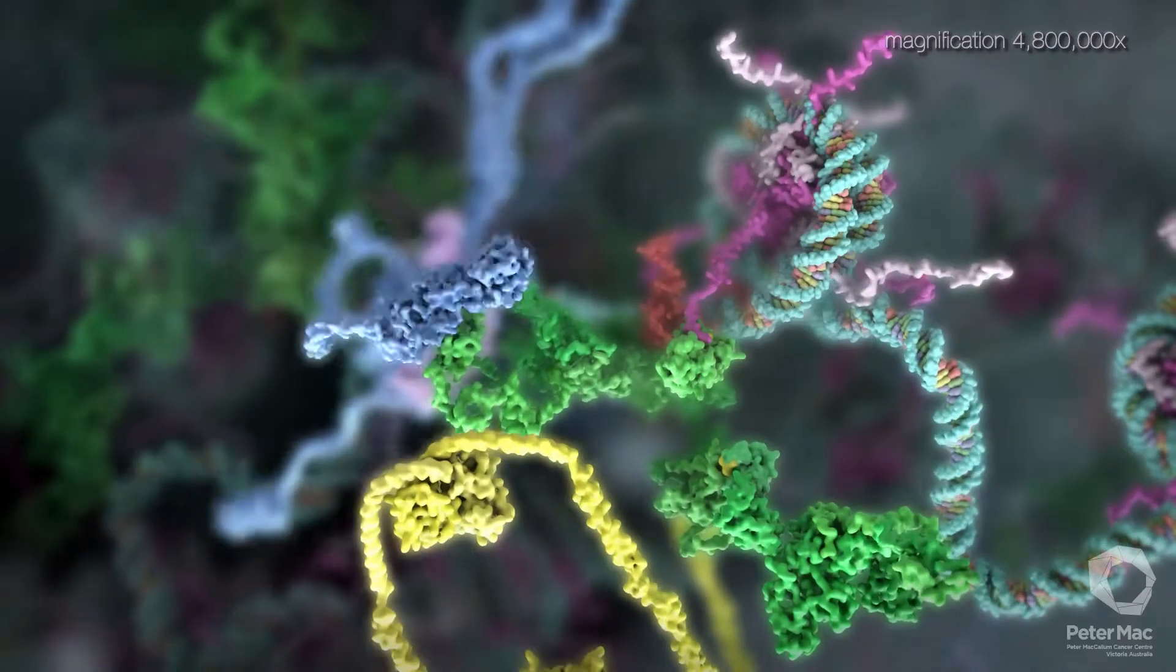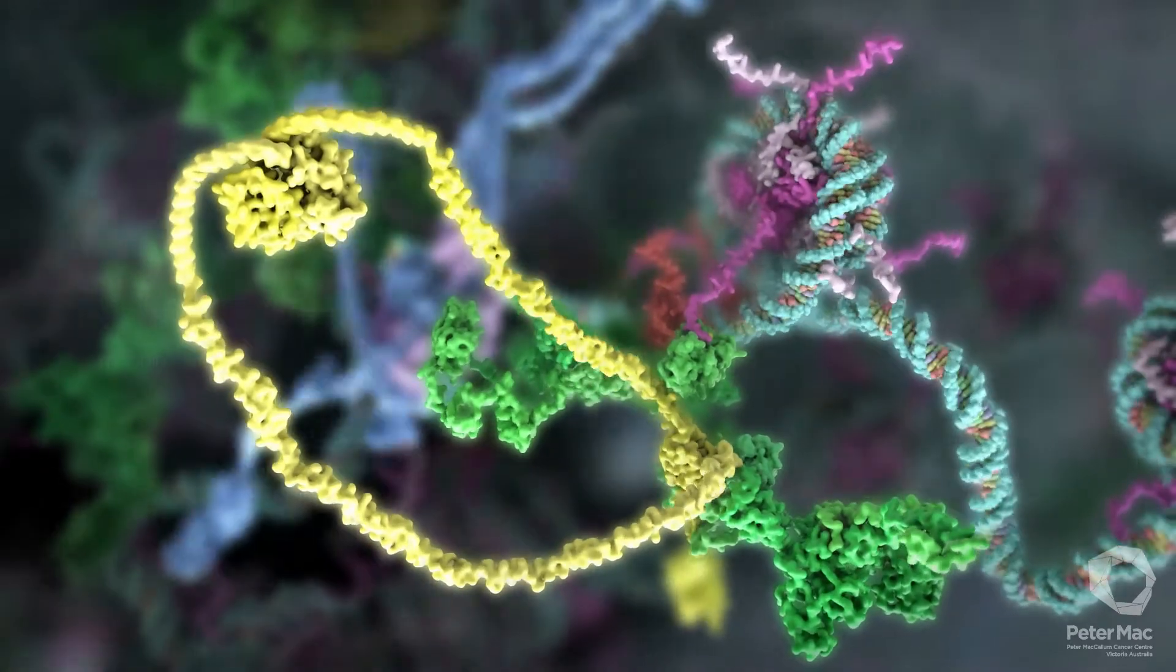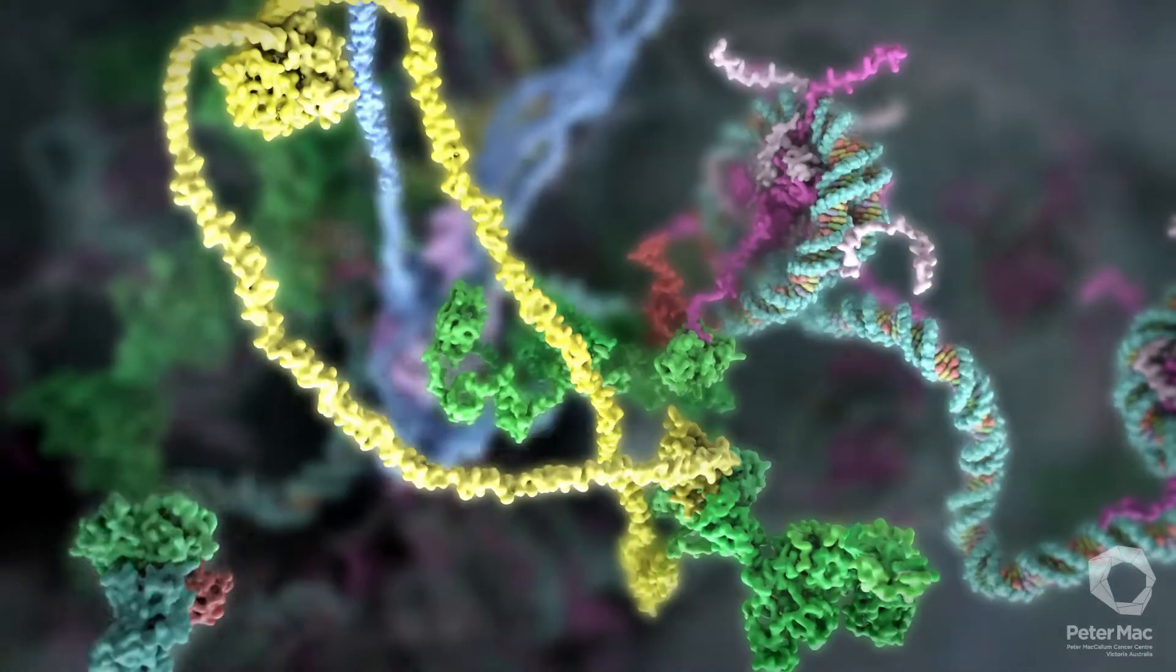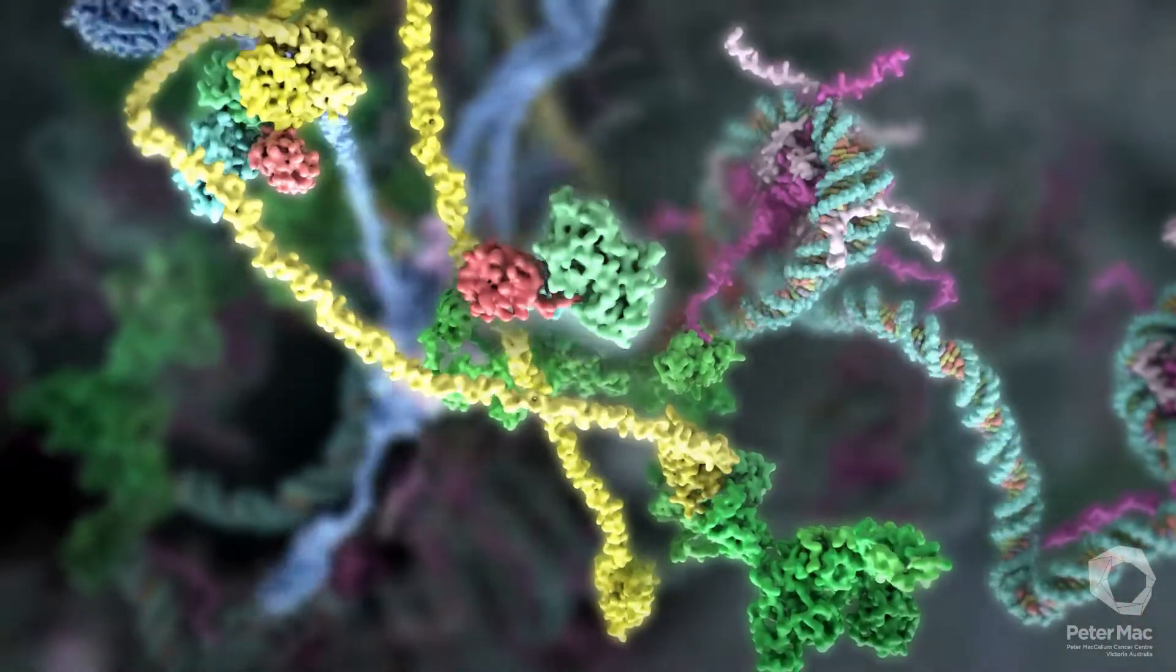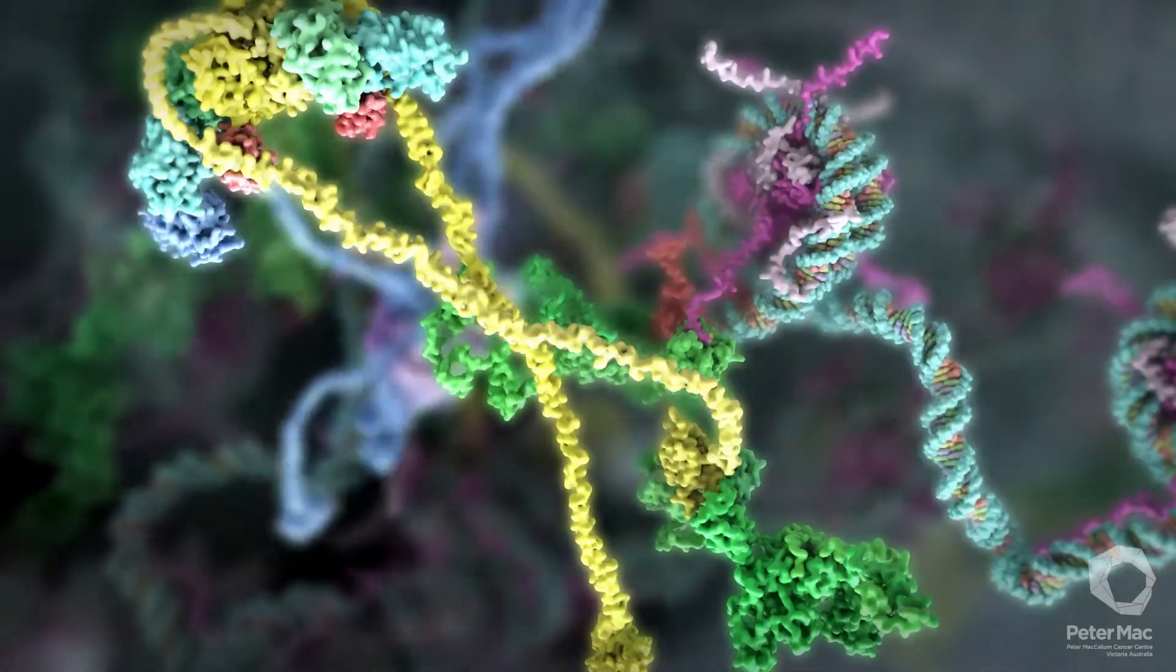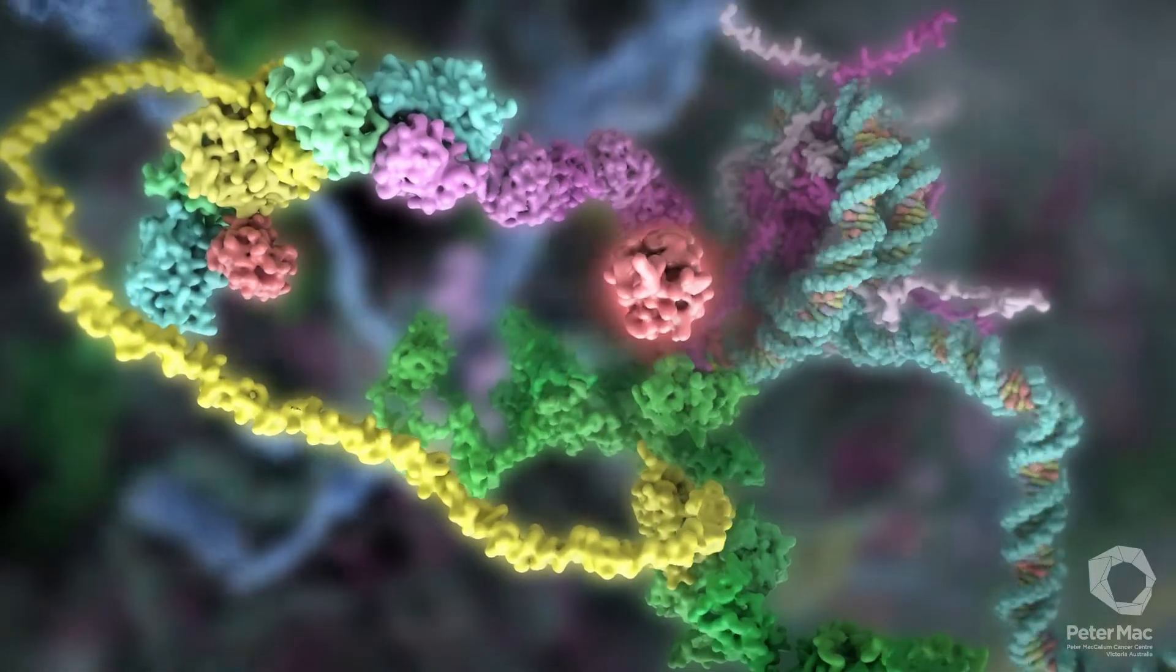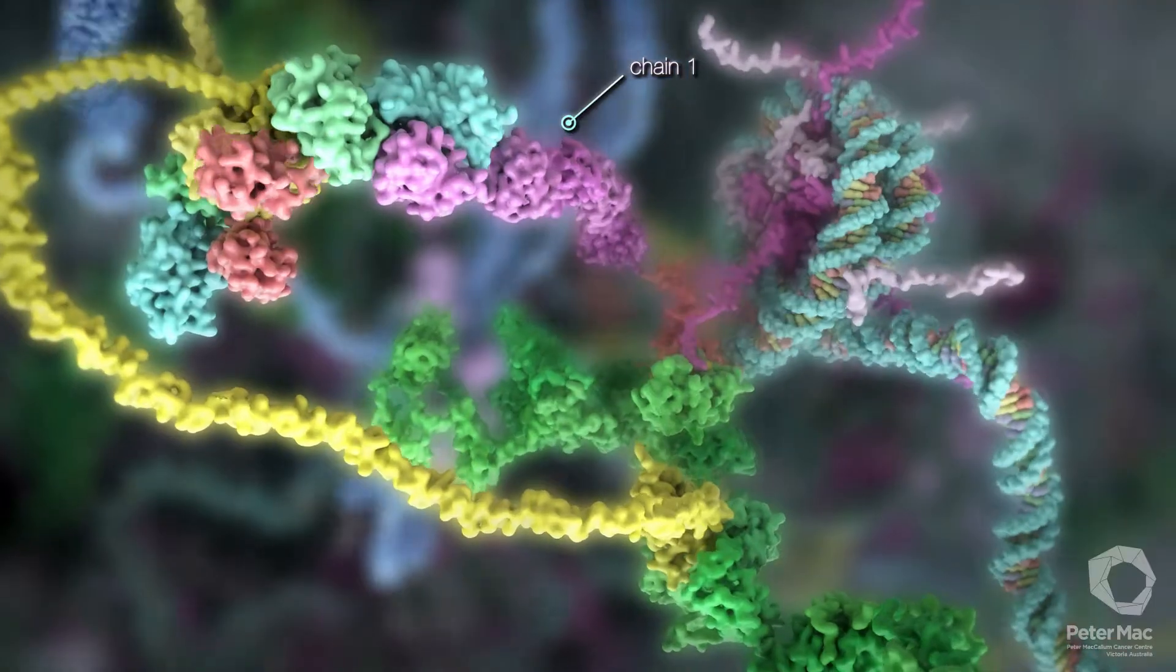This is machine two, assembling into its active form. Machine two builds a chain to link to machine three.